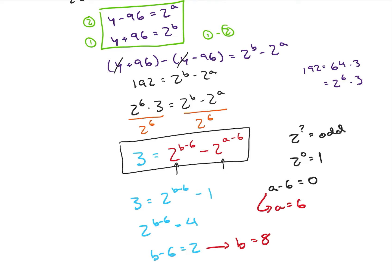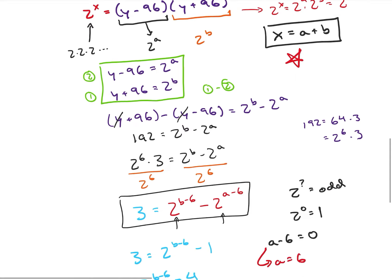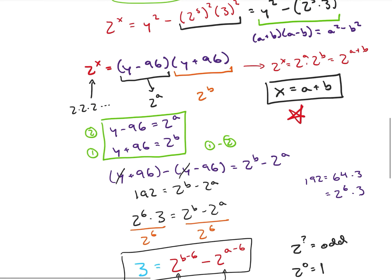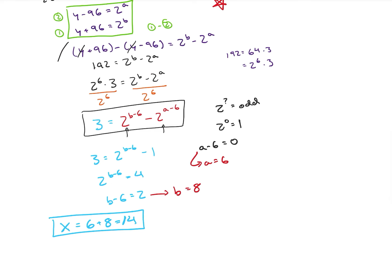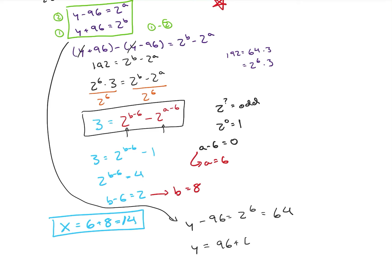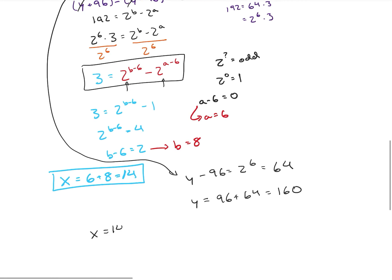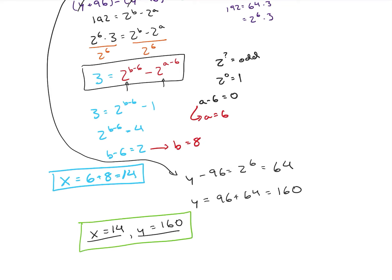So am I done? Pretty much. Remember we set up that x equals a plus b, so x equals 6 plus 8, which equals 14. Now I can also solve for y. From equation 1: y minus 96 equals 2 to the a, which is 2 to the 6, which is 64. So y equals 96 plus 64, which is 160. My solution is x equals 14 and y equals 160.